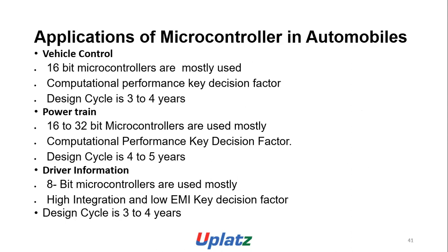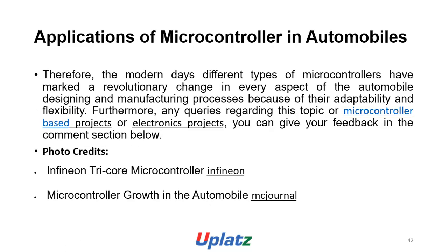Application control systems and computer control industry use computational performance, scale, and distance factors. Power drive 16 to 32-bit processors are used in embedded systems. Integration in low-end systems has key decisions for distance efficiency of three to four years. Therefore, modern mechanisms are changing every aspect of automobile manufacturing processes.